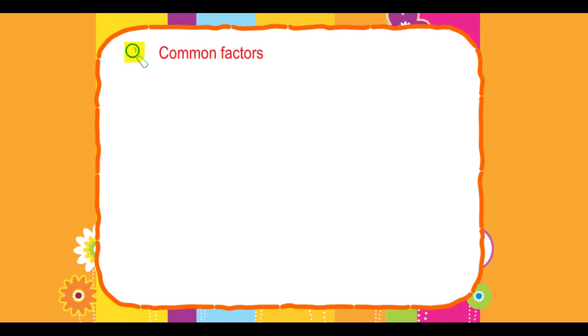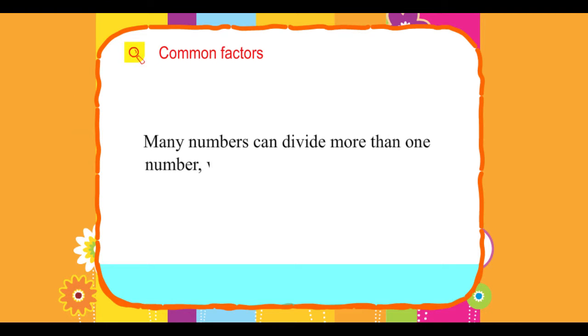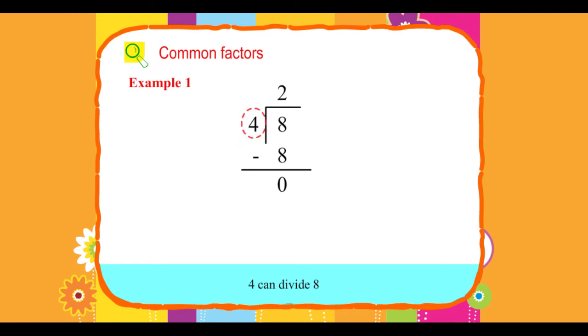Common Factors. Many numbers can divide more than one number without leaving a remainder. Example 1: 4 can divide 8, 4 can divide 20, 4 can divide 24, and so on.